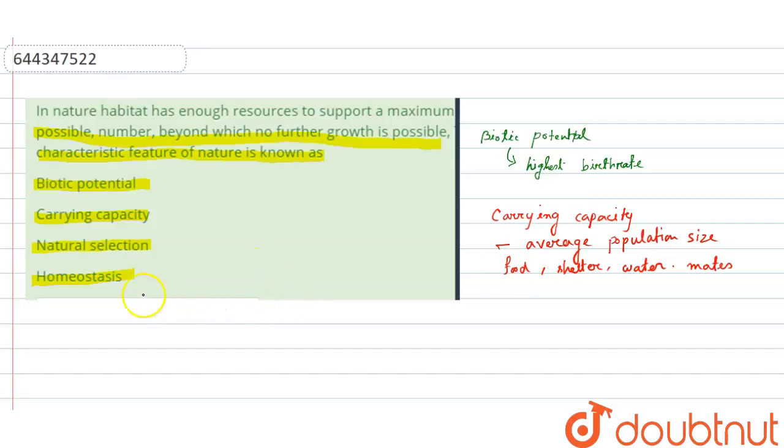Now the third term which is given there, natural selection. So this natural selection means it is a process in which organisms adapt to their environment through selectively reproducing changes in its genotype.